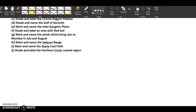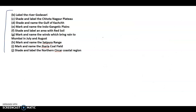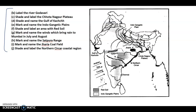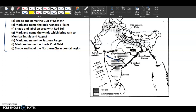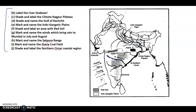Now you have to label these on the map — pause the video and label these things. You can see this is River Godavari. Then the second part is shade and label the Chota Nagpur Plateau — this is Chota Nagpur Plateau, you can see this part.